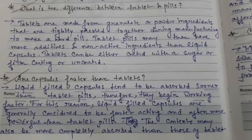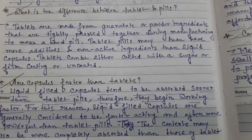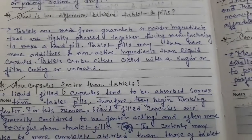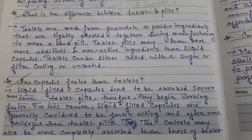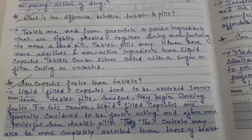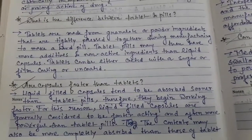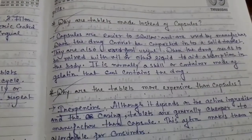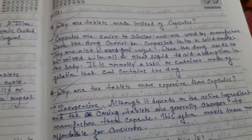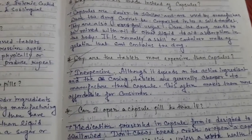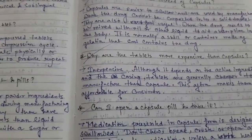Are capsules faster than tablets? Obviously, capsules are faster than tablets because the absorption power of the capsule is high. One part of gelatin is used to make the capsule. The outer surface of the capsule is called a shell, and this shell gives quick, faster action. The absorption power of capsules is more than tablets. Why are tablets more expensive than capsules? The cost depends on the excipients and the manufacturing process.